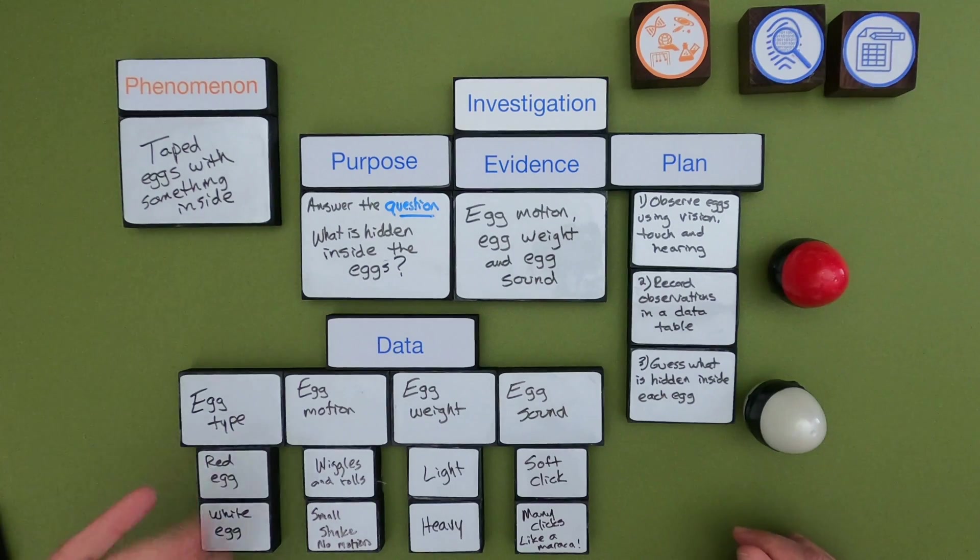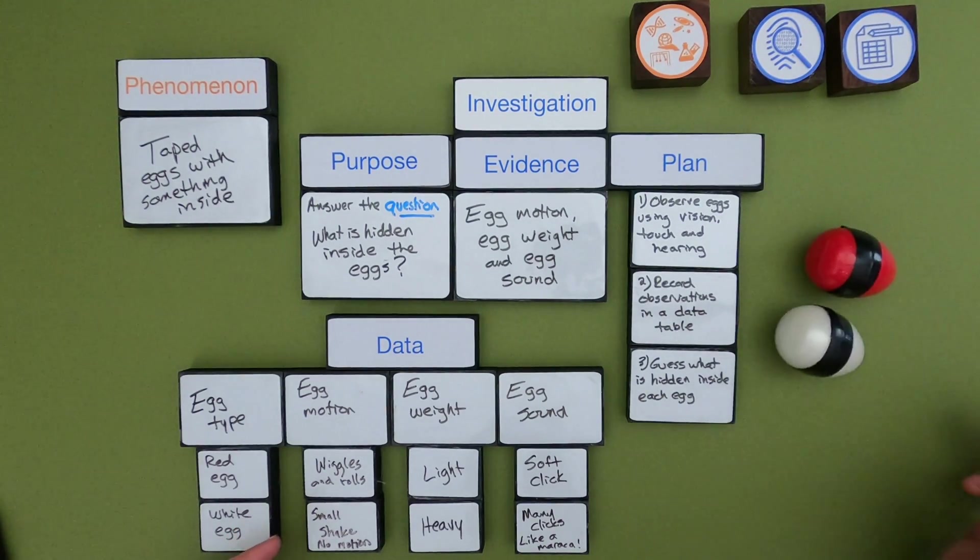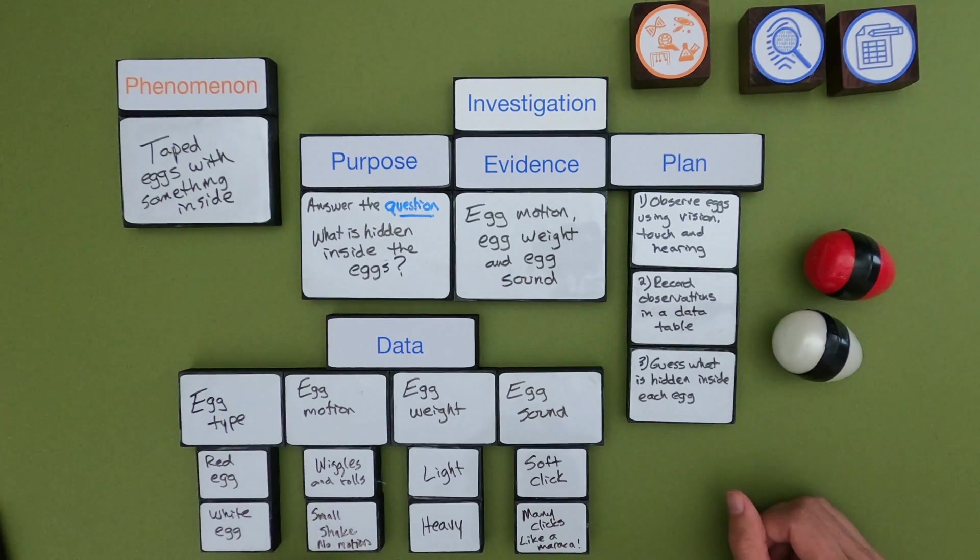Okay so what I wrote down is the red egg wiggles and rolls all around and then the white egg when you drop it it shakes a little bit but it doesn't move. The red egg is really light compared to the white egg which is going to be really heavy.